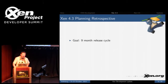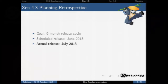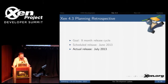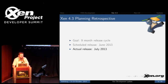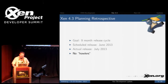How did 4.3 go? Our goal was a nine-month release cycle, with a scheduled release of June 2013. The actual release was July 2013 — we slipped by about three weeks. The main reason was that some security issues were found where the disclosure was going to be early July. We thought it would be silly to release at the end of June and then a week or two later say 'by the way, there were bugs in that one.' So we decided to slip the release, and then slipped again for marketing reasons. Overall, we did a very good job — no really terrible bugs that I'm aware of.